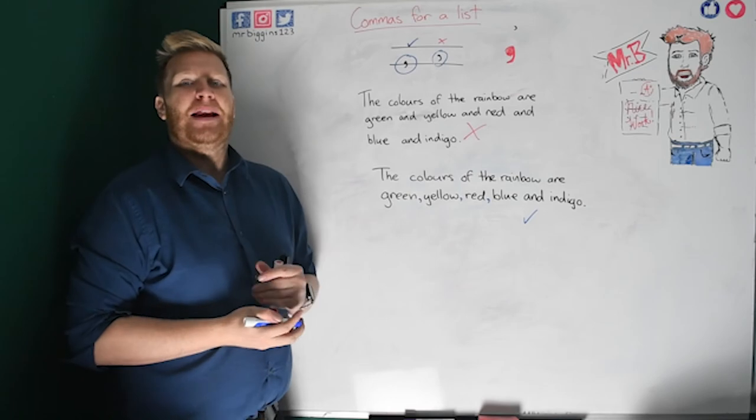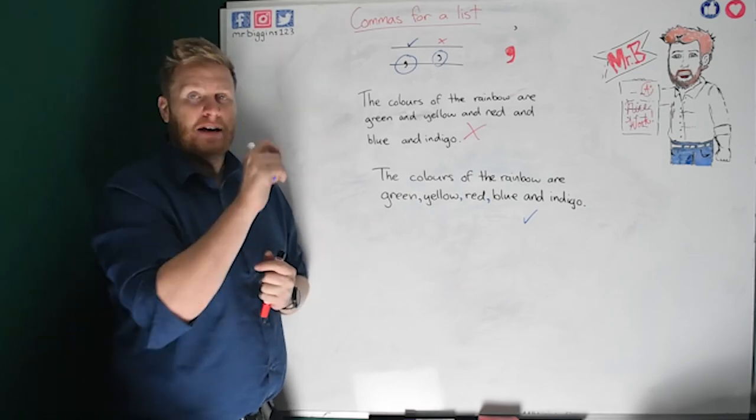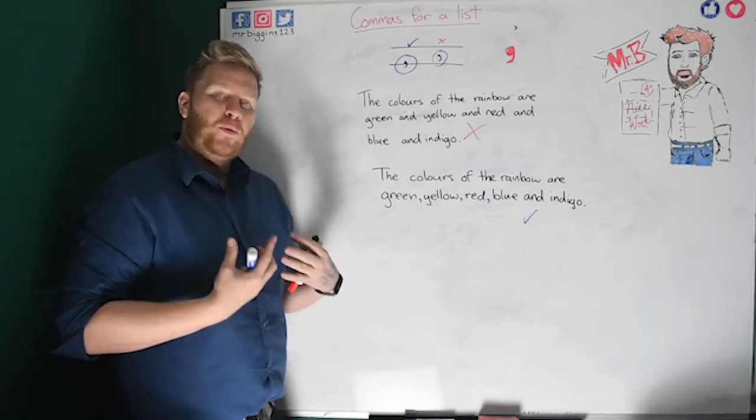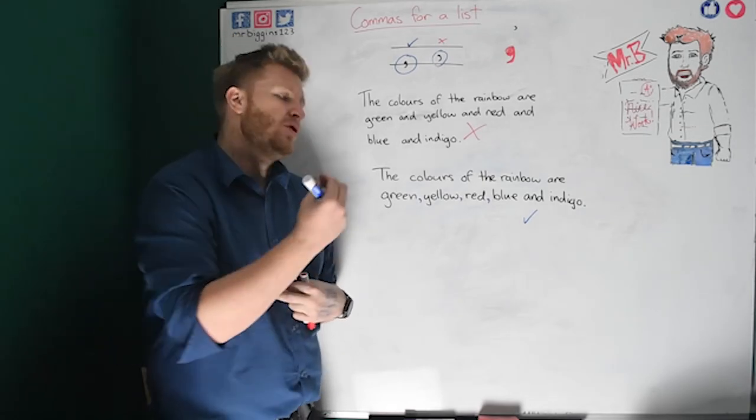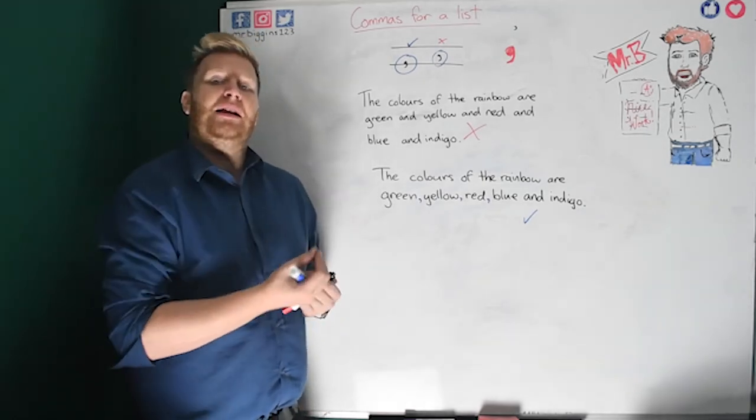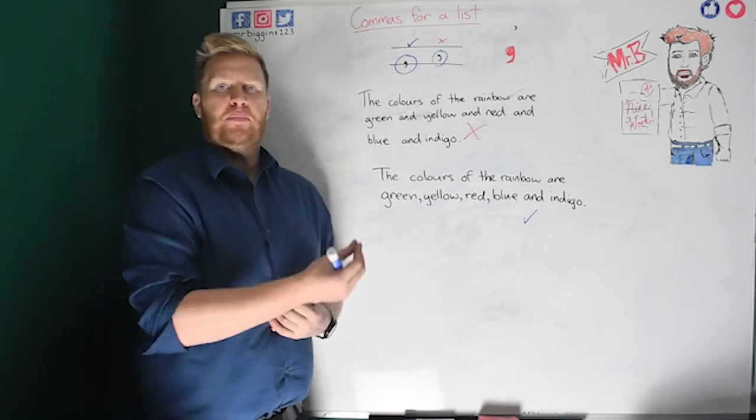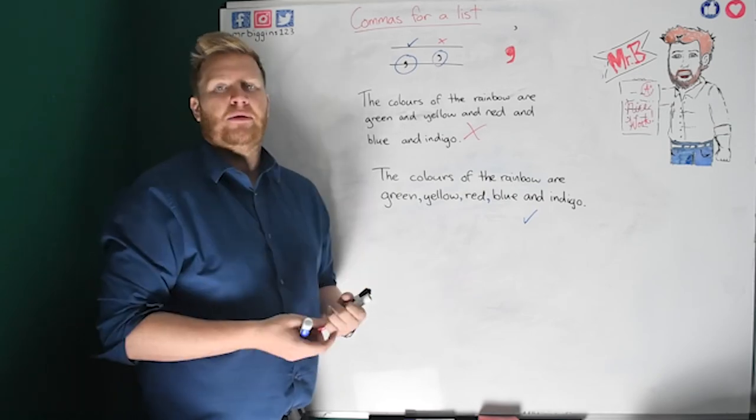Now, a comma has a full stop with a tail on. When we're reading and we see a comma, we should leave a little gap. Okay. A minute pause. Right. Not as much as a full stop but a little gap and it's telling the reader to take a breath and it helps us to understand how we're reading a bit more.